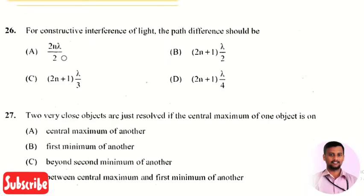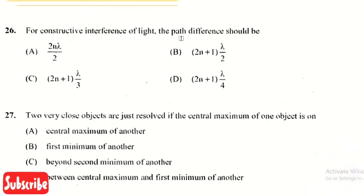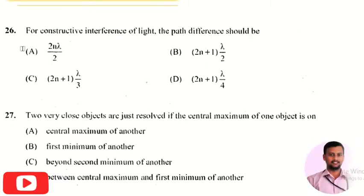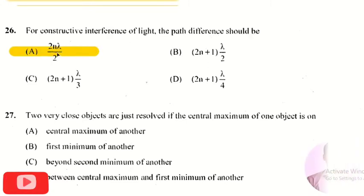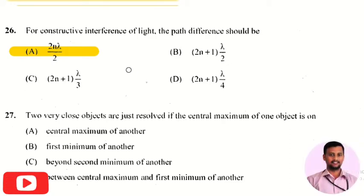The next question is: for constructive interference of light, the path difference should be? The right answer is option 1, that is it should be 2n lambda divided by 2.